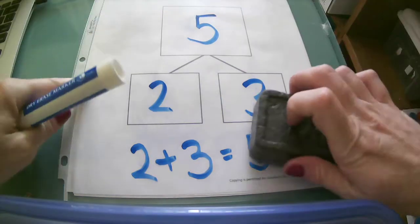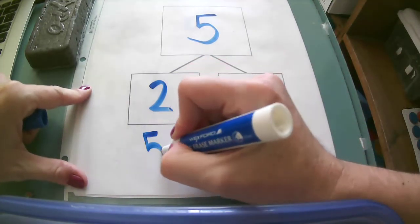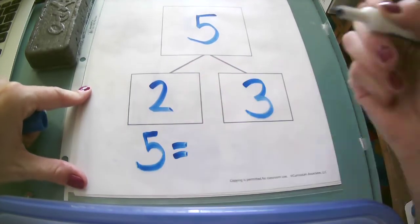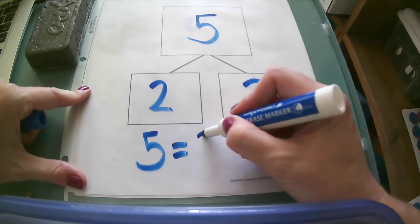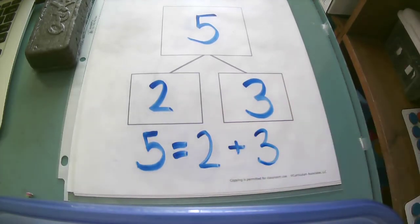I could also write this another way using that equal sign. I could start with my whole, put my equal sign and say 2 plus 3. So this would say 5 equals 2 plus 3, or 5 is the same as 2 plus 3.